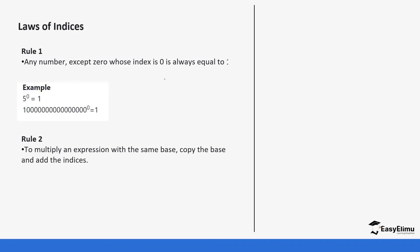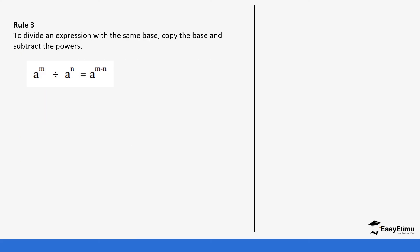If you multiply indices that are in different bases, that will not work. For example, a raised to power m times a raised to power n is the same as a raised to the power m plus n — you add the indices when the base is the same. If you had a raised to m times b raised to n, you cannot combine them as ab raised to m plus n — that is not possible. The third rule is division: if you have the same base, you subtract the indices. For example, a raised to m divided by a raised to n equals a raised to m minus n.